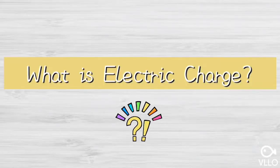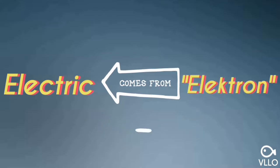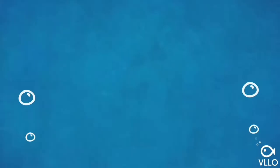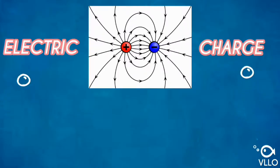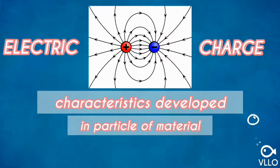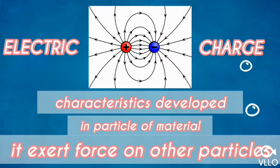It is very difficult to define what electric charge is. Electric comes from the word electron, which means amber. Electric charge is the characteristic developing particle of a material due to which it exerts force on other particles.